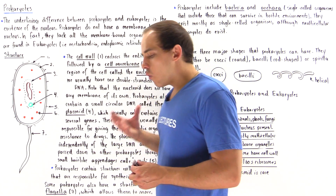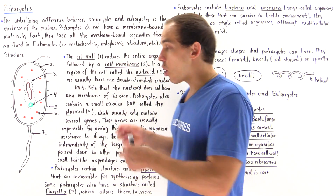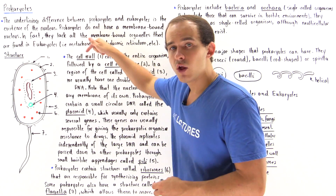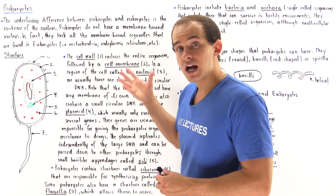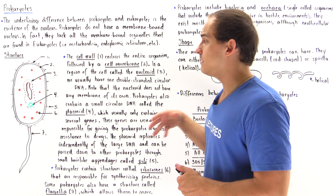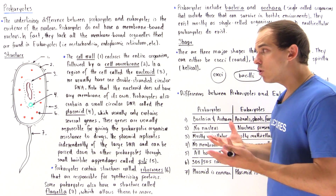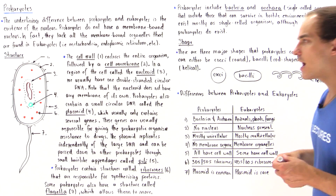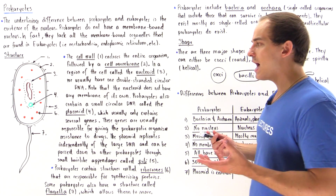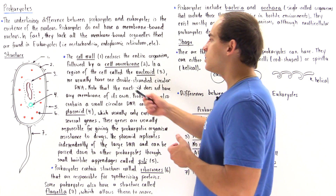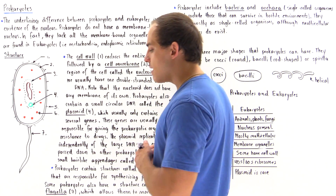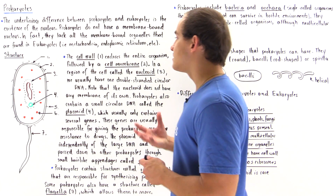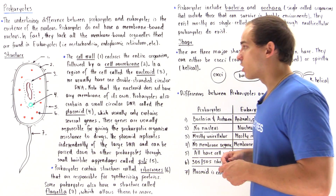All prokaryotic organisms are enclosed in a cell wall, and the cell wall basically protects the cell from the outside environment. We also have something called the cell membrane, which is basically responsible for cell transport.